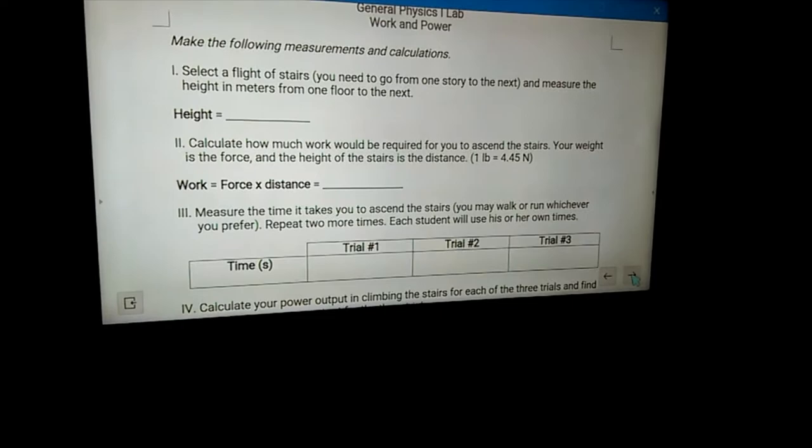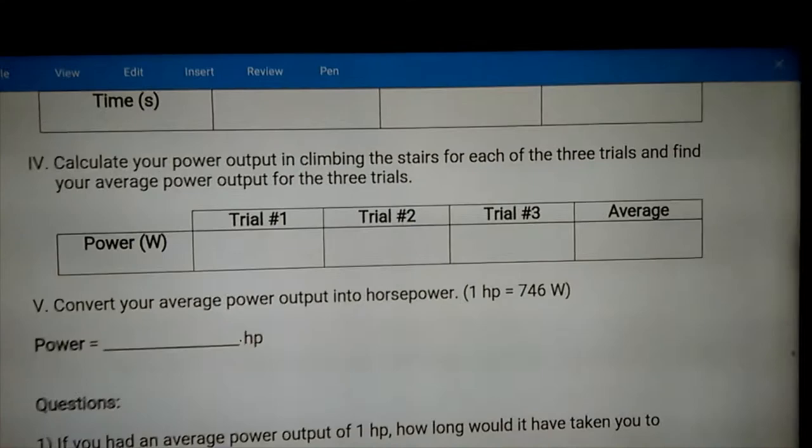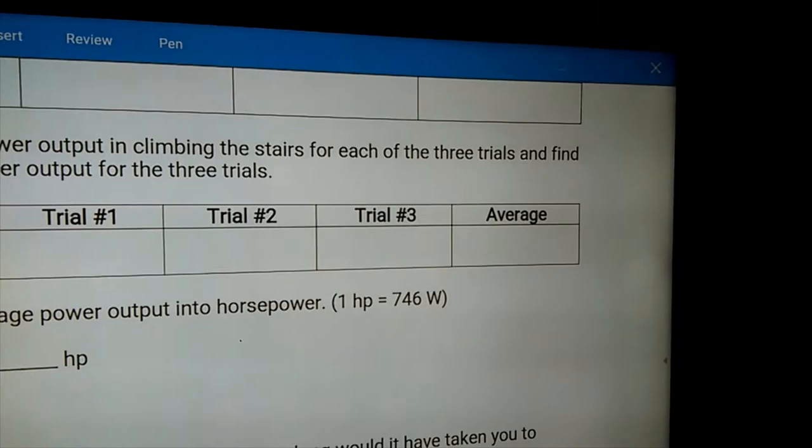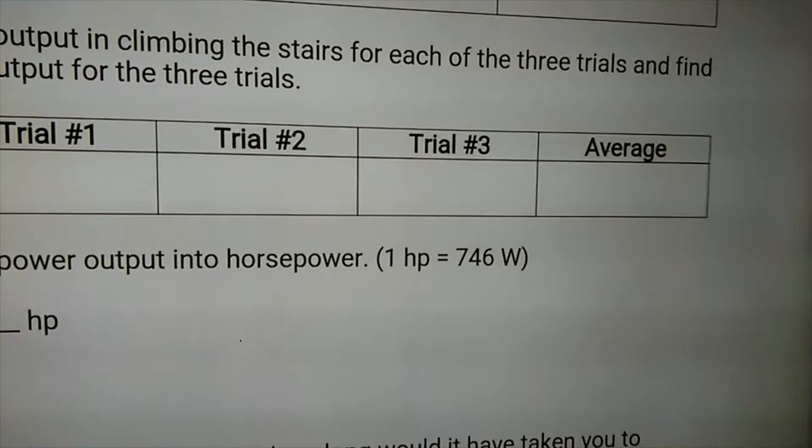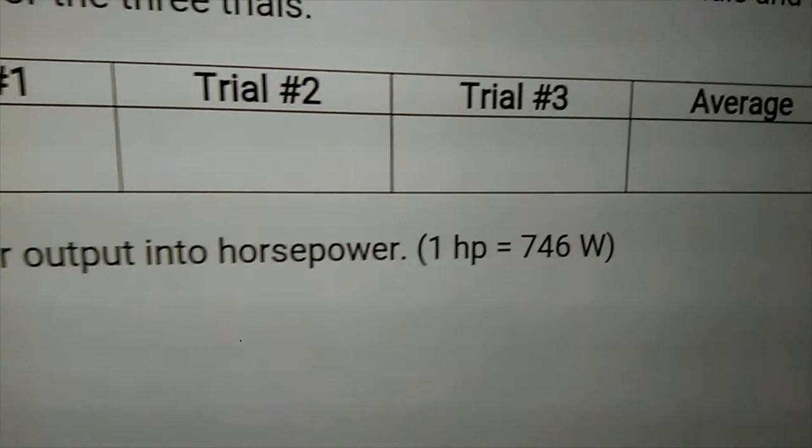Once you've got that, then you're ready to calculate your power. Calculate those three different trials, calculate your average, and convert that to horsepower. That conversion is one horsepower equals 746 watts. So whatever your average is, you're just going to divide by 746 to calculate your horsepower.